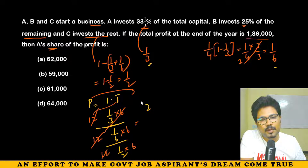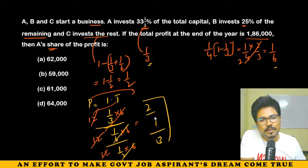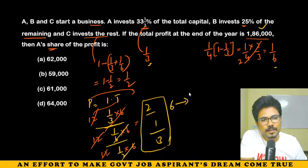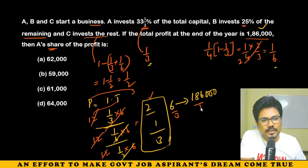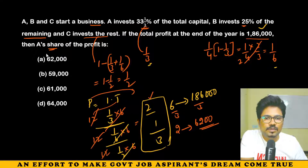The profit ratio is 2 : 1 : 3. Total is 6 units equal to 1,86,000. So 1 unit = 31,000. A's share is 2 units = 62,000. Answer is 62,000.